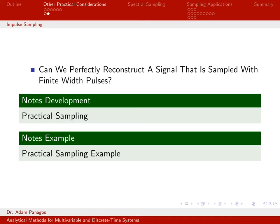If I sample with finite width pulses, is it still possible for me to perfectly reconstruct my original signal from the sampled signal?